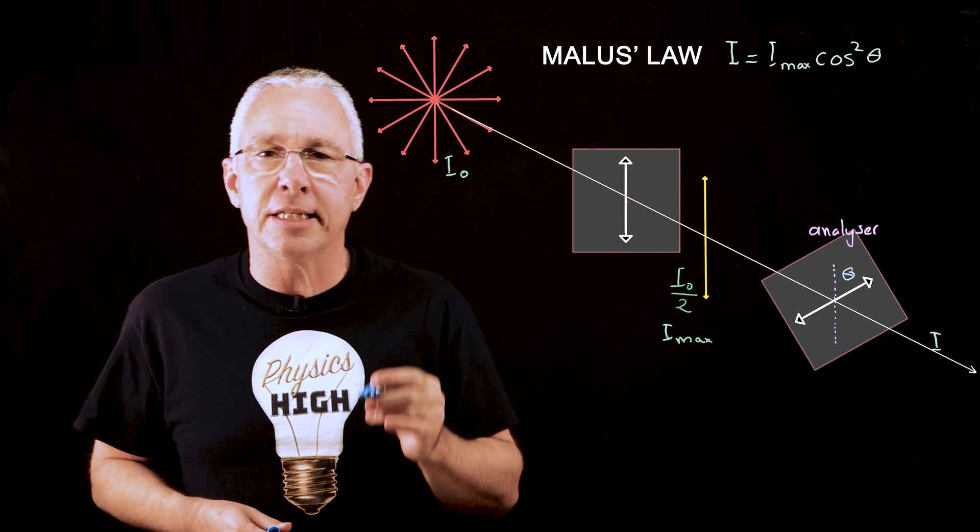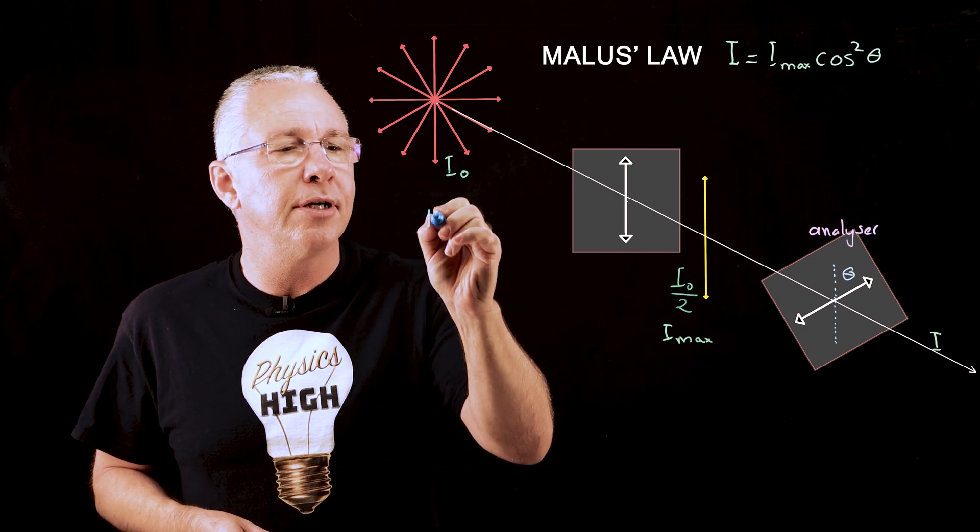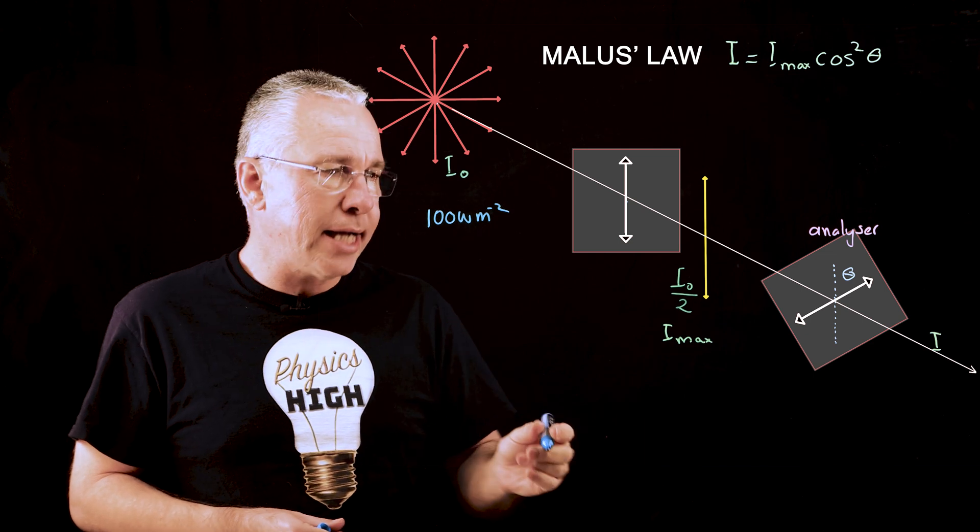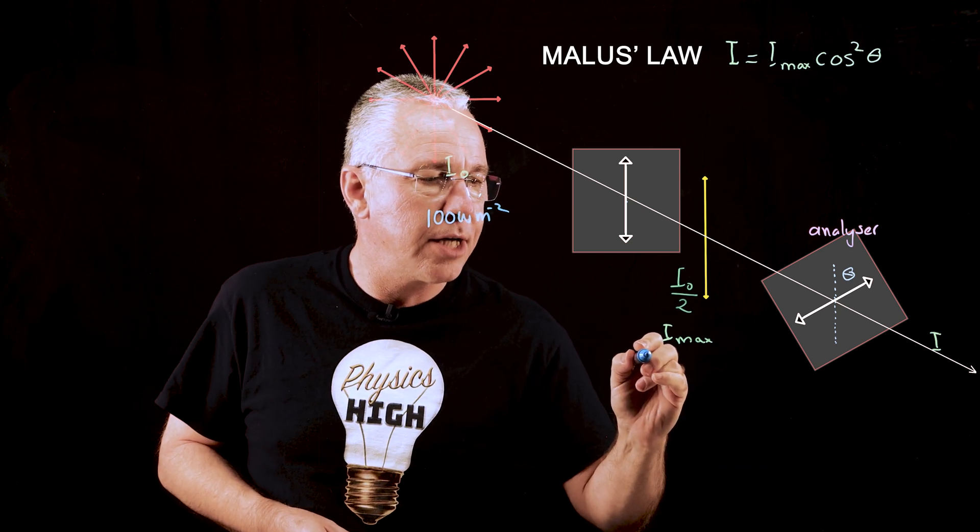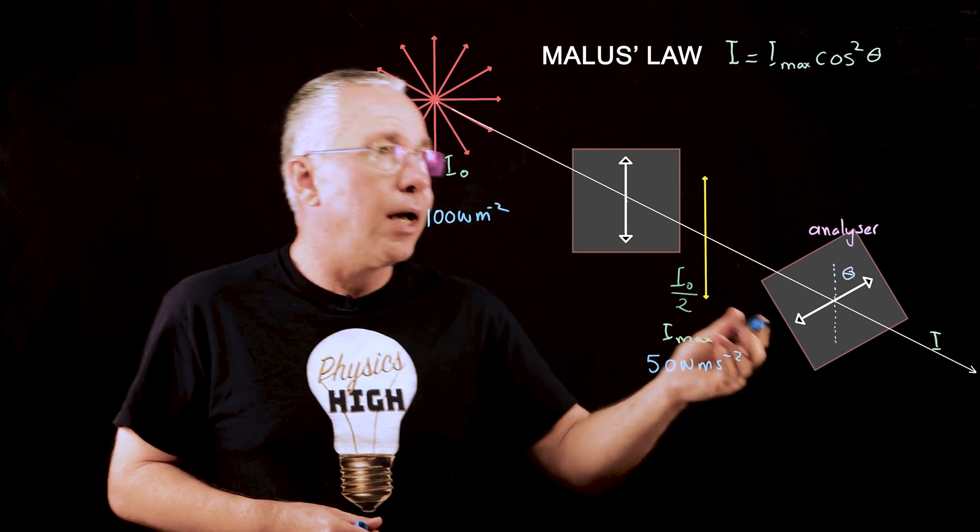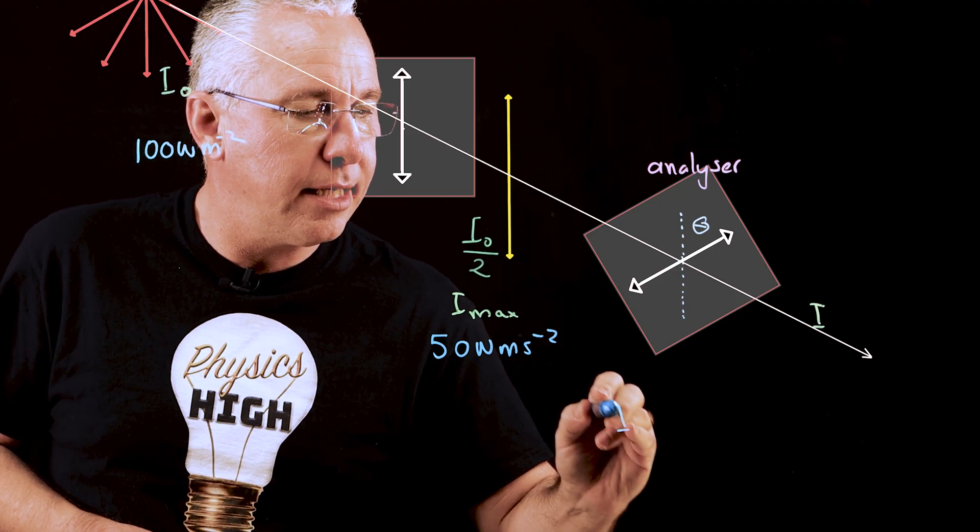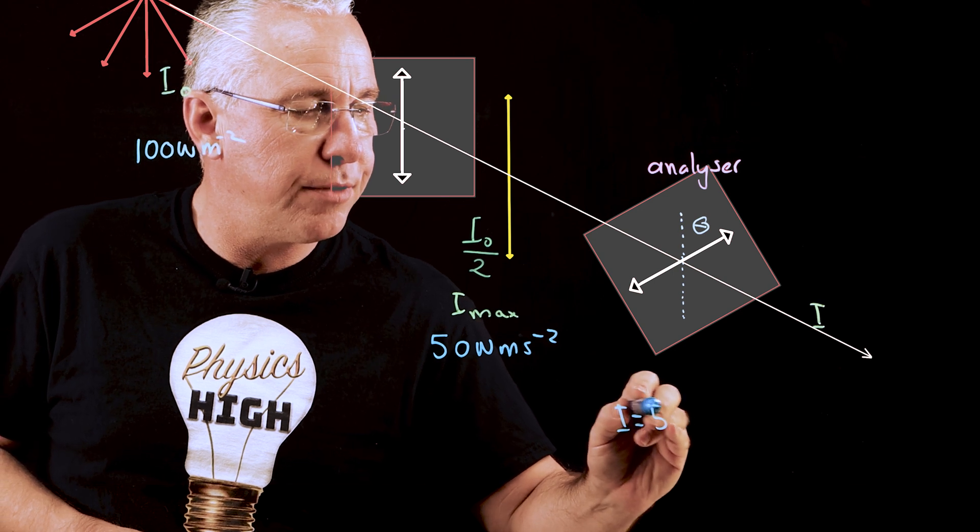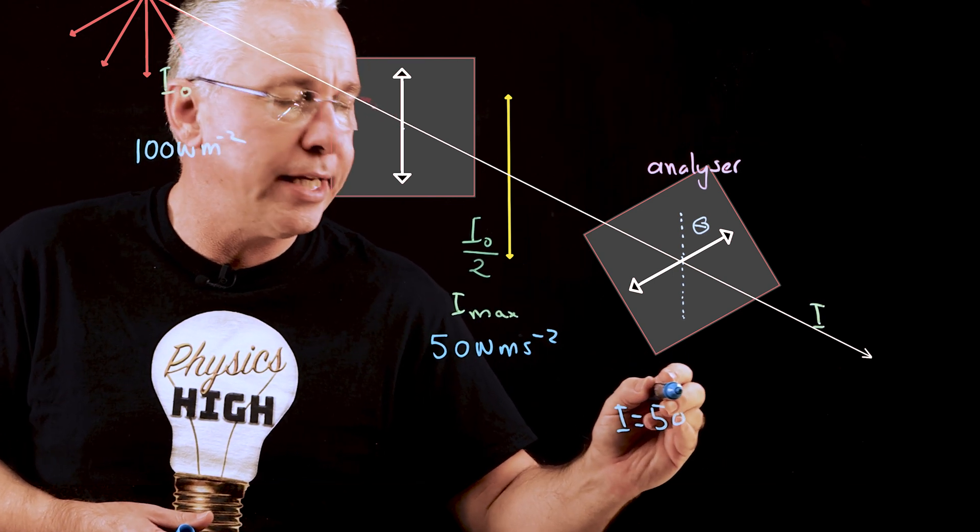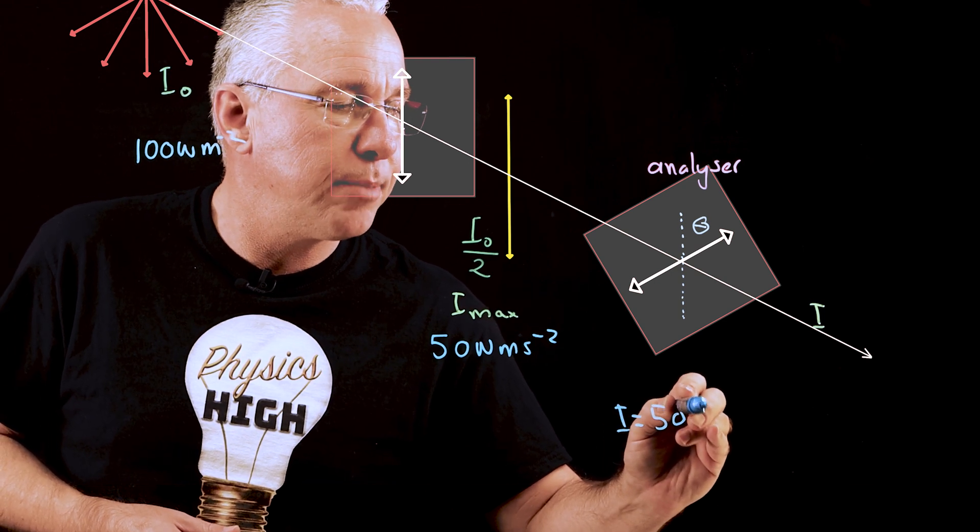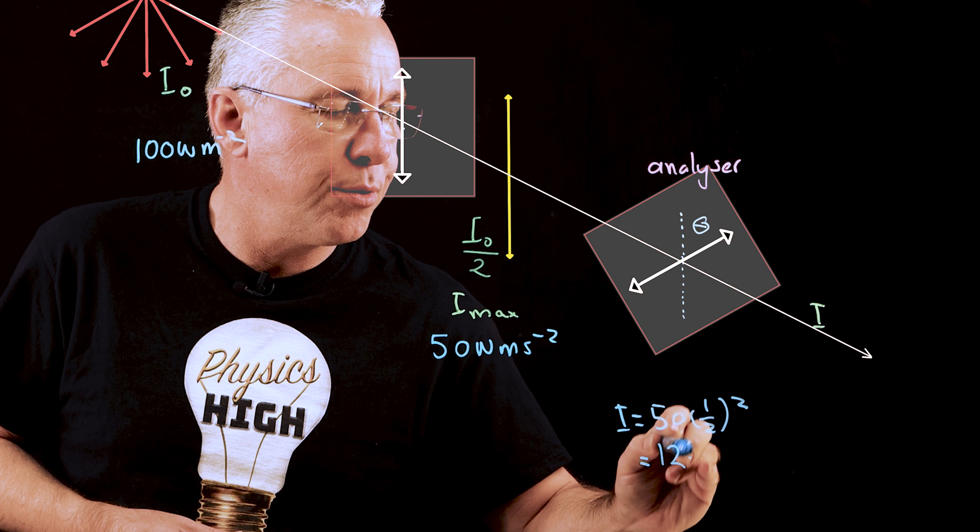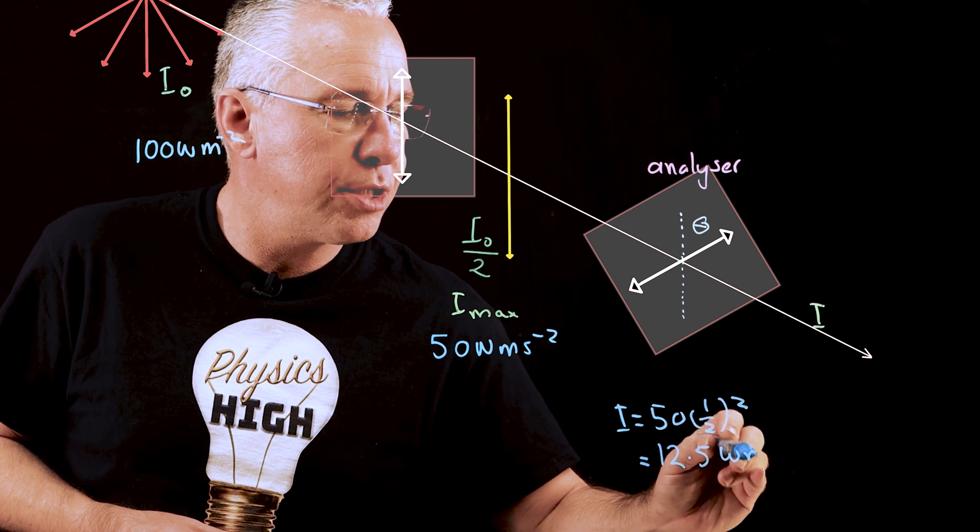If the initial intensity that we had at the beginning was 100 watts per square meter then over here our I max or I naught over two is going to be only half of that which is 50 watts per square meter. And finally our intensity which is equal to the maximum intensity which is 50 multiplied by the cosine squared of 60 degrees. Cosine 60 is a half and so we multiply this by one half all squared we get 12.5 watts per square meter.